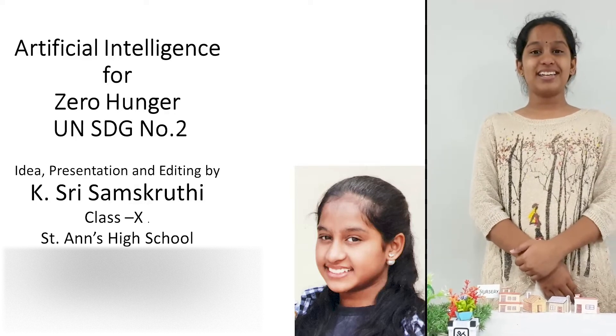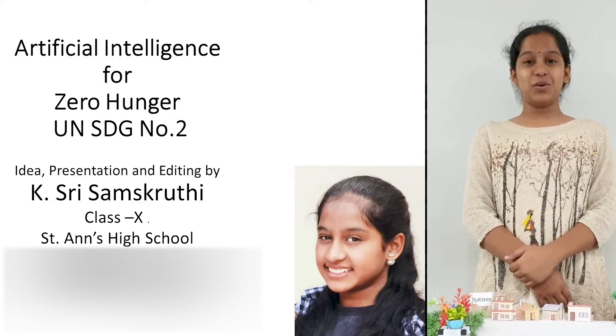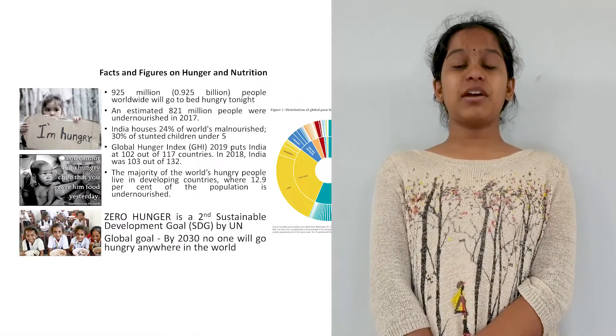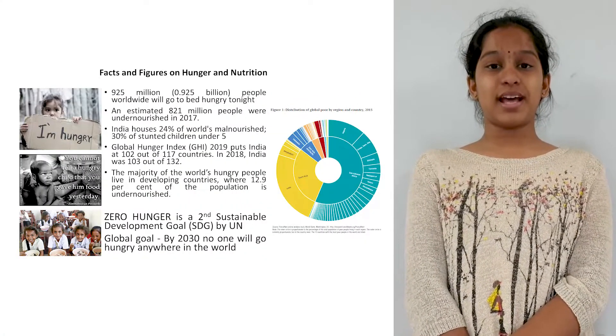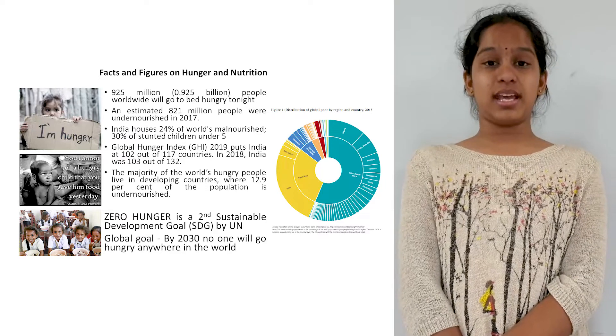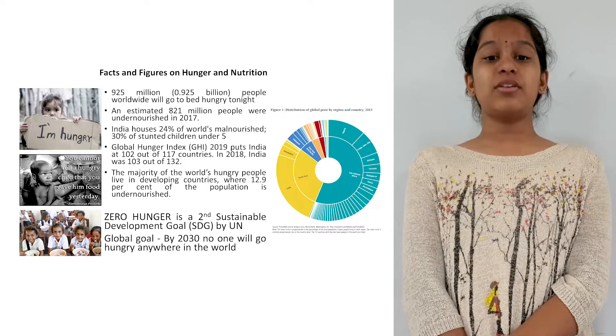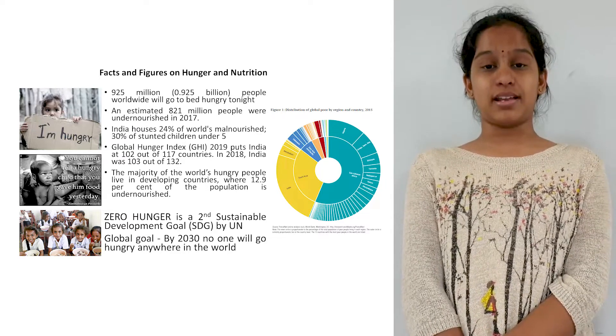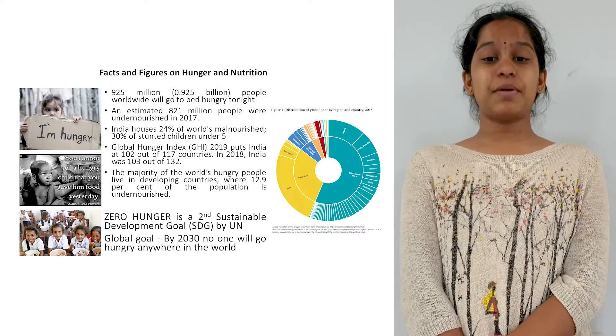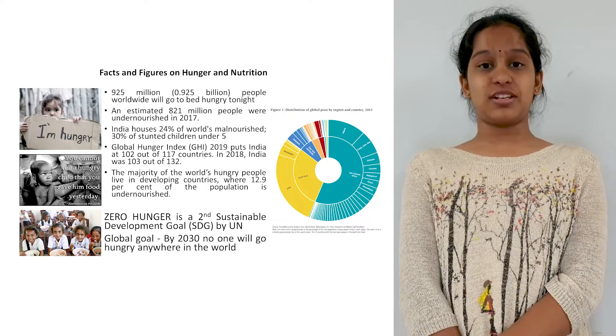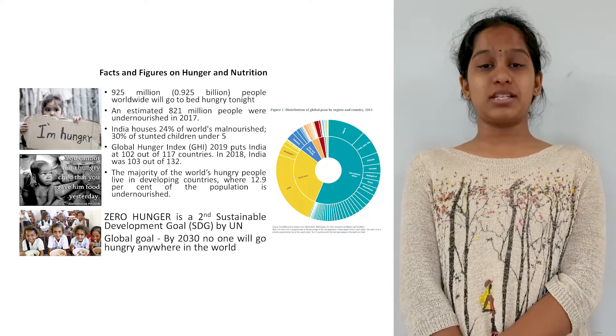Zero Hunger is the second sustainable development goal of the UN. Some facts and figures on hunger — they are not so impressive, because 925 million people worldwide will go to bed hungry tonight. India houses 24% malnourished, 30% of stunted children under 5, and around 25% of poor people.